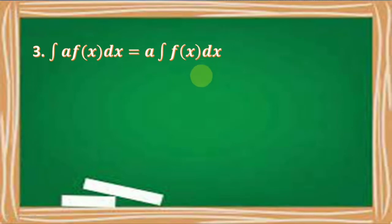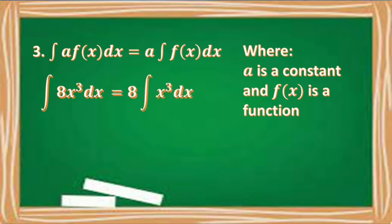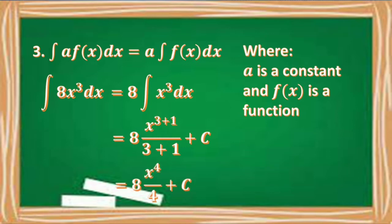The integral of a times f of x dx is equal to a times the integral of f of x dx, where a is a constant and f of x is a function. For example, the integral of 8x cubed dx is equal to 8 times the integral of x cubed dx, which is equal to 8 times x raised to 3 plus 1 over 3 plus 1, plus C. Then we have 8 times x to the 4 over 4, plus C. Simplifying, we divide 8 by 4, giving us 2x to the 4th plus C.